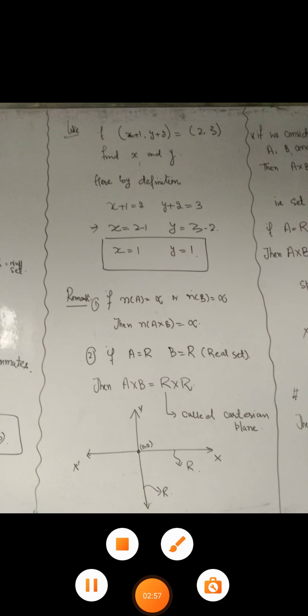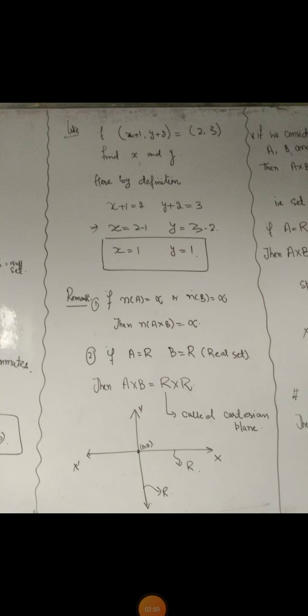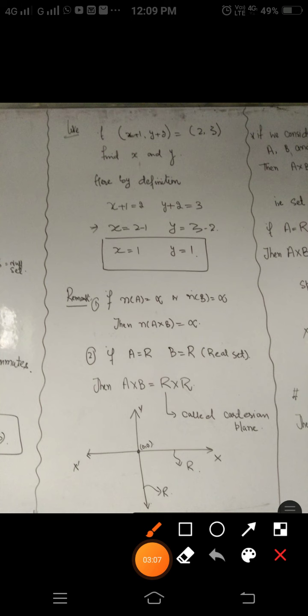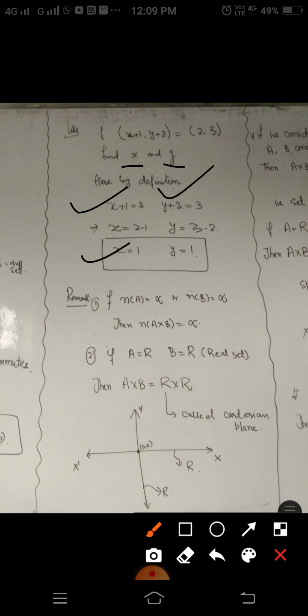Now let me consider an example. If we have two ordered pairs (x+1, y+2) and it is given that this ordered pair equals (2, 3), we have to find the values of x and y. Two ordered pairs are equal if and only if their first components are the same and second components are the same. So x+1 = 2 and y+2 = 3, which implies x = 1 and y = 1.